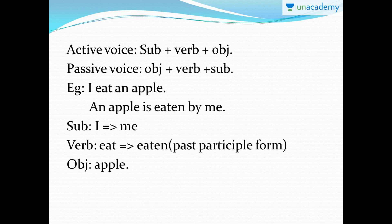'I eat an apple.' When you put that in passive voice, it becomes 'An apple is eaten by me.' Subject 'I' turns to 'me', the verb 'eat' becomes 'eaten' in past participle form. Since the apple is singular, we use 'is'. So 'An apple is eaten by me.' You can see 'is' is present — that marks the simple present tense.